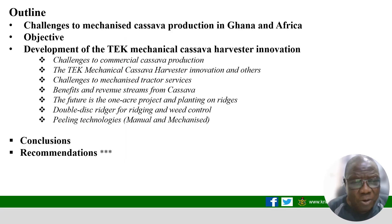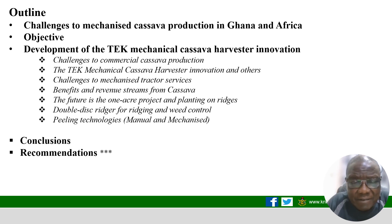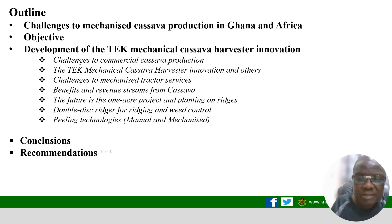The outline I'll follow covers: cassava, the challenges to mechanical cassava production in Ghana and Africa, objectives and development of the mechanical cassava harvester, innovation, some of the attributes, some of the evidence, and then conclusion and recommendation.